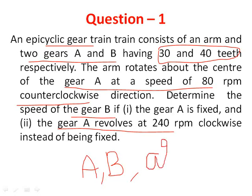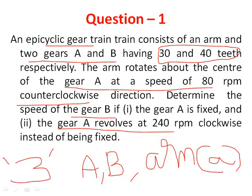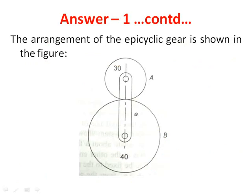In addition to the two gears, there is an arm. The picture for the question is not given, so we need to draw it from the number of teeth provided. Gear B is larger and gear A is smaller, and the arm connects these two gears.